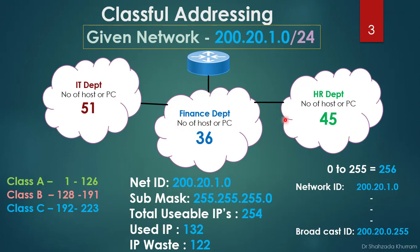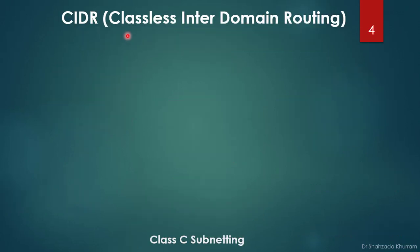Another issue with classful addressing: if any PC in one department is infected with a virus, it will also infect all other departments because they all belong to the same network. This is a security issue. It's also difficult to manage — a problem in one department affects the entire network. This is why we use IP subnetting, which belongs to classless inter-domain routing, or CIDR.